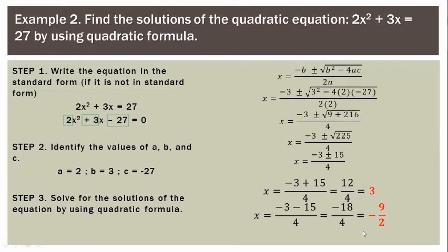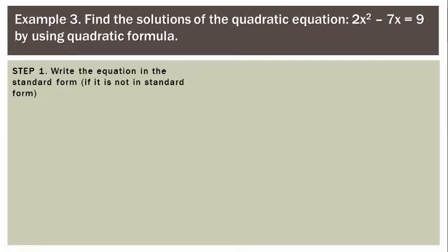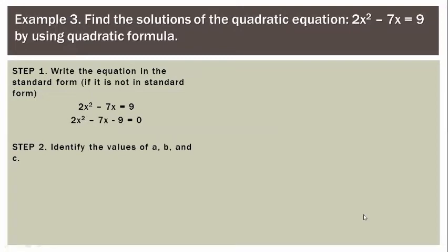These are the solutions to the quadratic equation 2x squared plus 3x equals 27. Next example: Find the solutions of 2x squared minus 7x equals 9 using the quadratic formula. Apply the same process — write in standard form: 2x squared minus 7x minus 9 equals 0. Identify the values: a equals 2, b equals negative 7, and c equals negative 9.